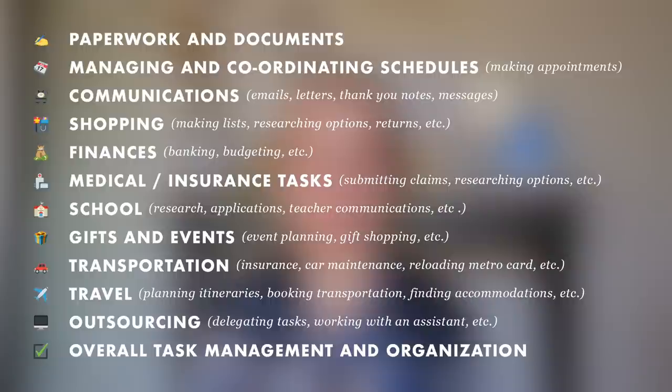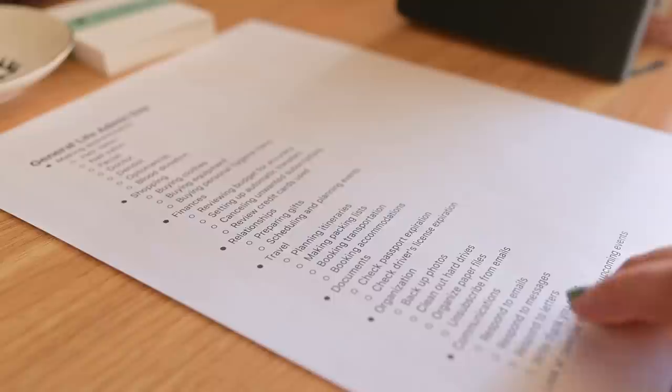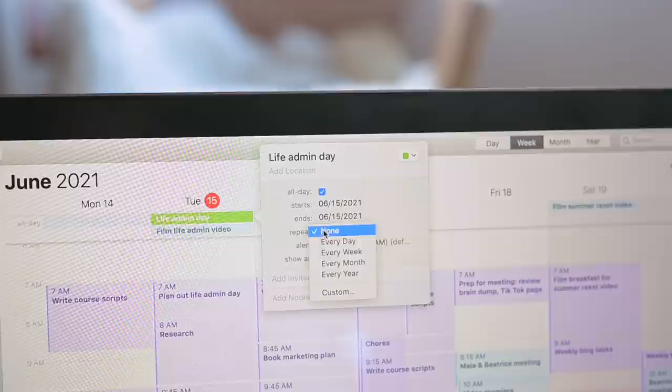Once you make a list of all of your life admin that one time, you can use it anytime you need a life admin day in the future, or you could set a recurring event on your calendar and just have that life admin day happen automatically. Then every time, you take a look at your list and just ask yourself which of these items needs to be done.